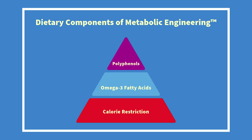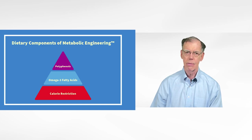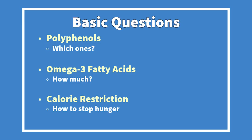Looking at the dietary components of metabolic engineering: the foundation is calorie restriction — the most powerful way to live longer and live better. We also need omega-3 fatty acids to activate AMPK and resolve inflammation, and polyphenols to further activate AMPK. This becomes the dietary pyramid for metabolic engineering. This raises some questions: for polyphenols, there are 8,000 — which ones? For omega-3 fatty acids, how much? And for calorie restriction, how can I do it without hunger? Because no one wants to restrict calories and go through life being hungry.